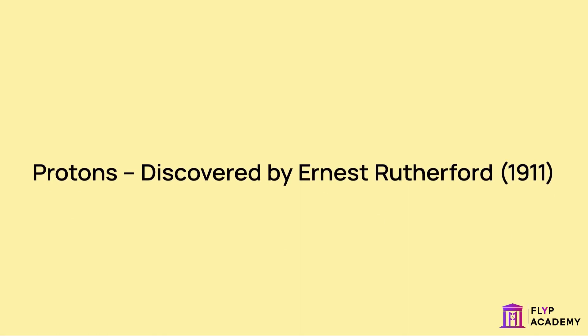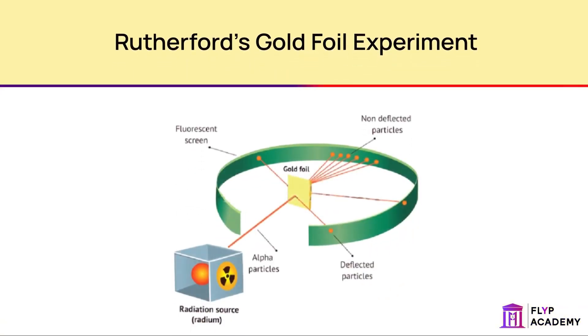Protons, discovered by Ernest Rutherford, 1911. Rutherford's gold foil experiment: He bombarded a beam of alpha particles, which are helium atoms, onto a very thin piece of gold foil. He recorded the scatter pattern of the deflected alpha particles on a zinc sulphide screen. He found that most particles are not in fact deflected but pass through the foil. This led to his conclusion that most of an atom's mass and all of its positive charge are located in the center of the atom.